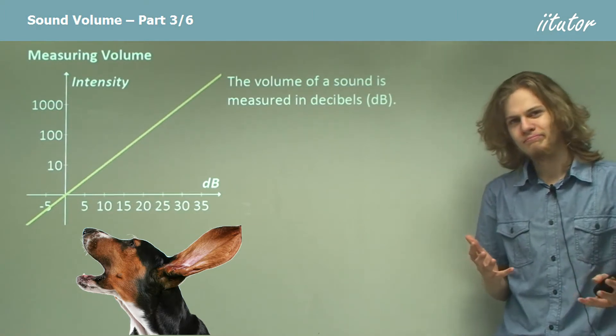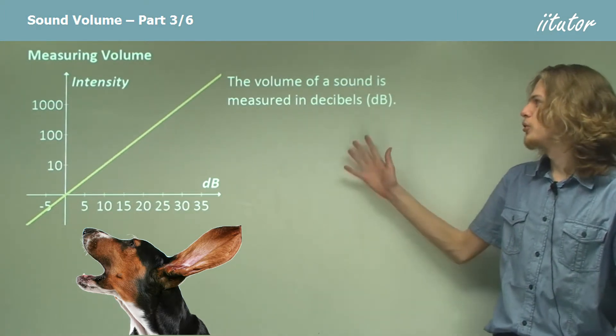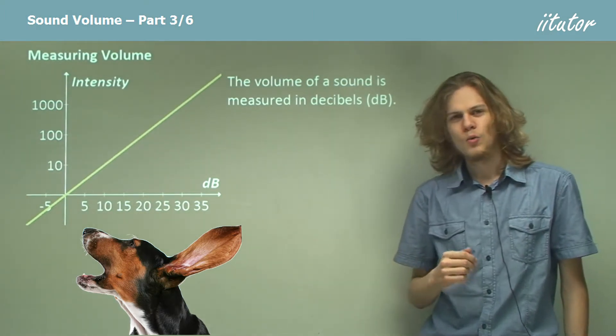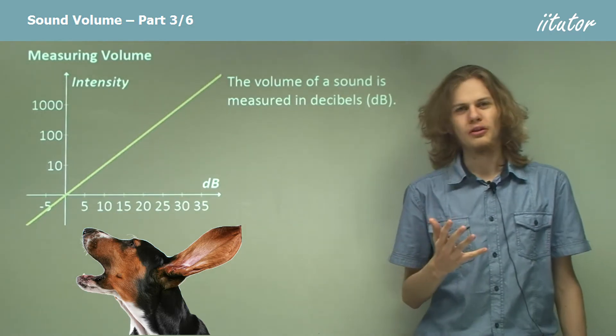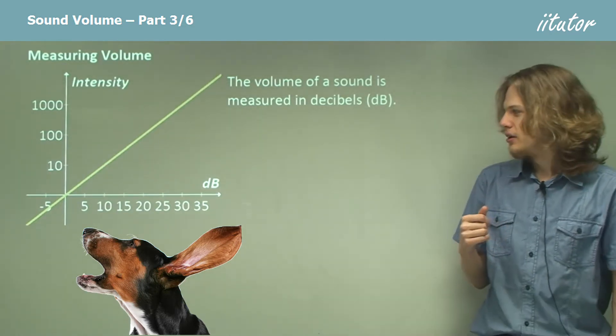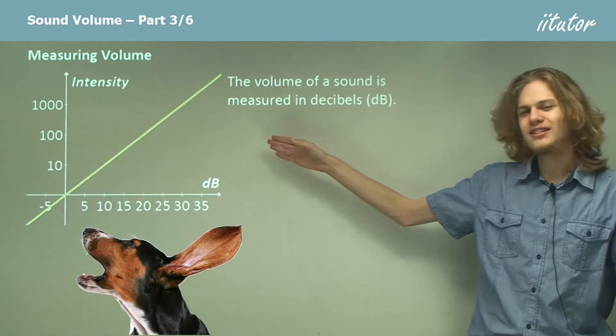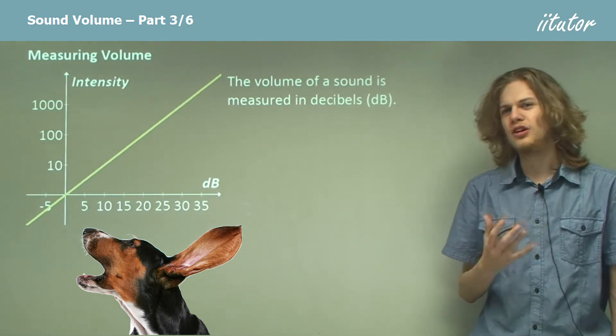Now how do we measure volume? It turns out that we use a scale called decibels, which will be a little bit unusual at first. We have a graph here of how the intensity of sound changes with decibels.